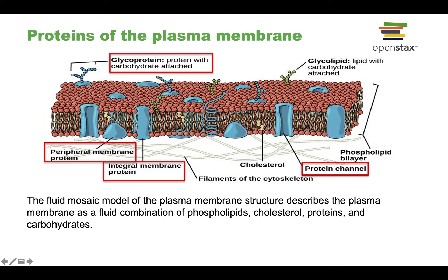Proteins of the plasma membrane come in all sorts of different types. We've got proteins that sit on the two faces of the plasma membrane — these are called peripheral membrane proteins because they sit on the periphery of the membrane rather than being inside of it. We have integral membrane proteins that span across the membrane. A subform of these integral membrane proteins are the ones that have a hollow inside to allow molecules to pass through — these are usually called protein channels.